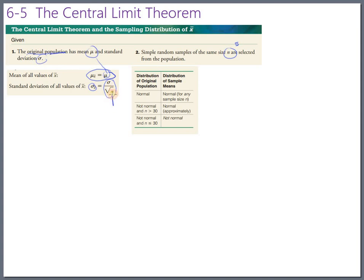It also says the standard deviation of the averages will be smaller than the standard deviation of the population, and this formula tells us how much smaller — it's divided by the square root of n, where n is the sample size. In our examples, n was five, so we should shrink down by about the square root of five. And the last part says the mean stays the same, the standard deviation gets smaller with a formula for how much smaller, and the shape will get normal.